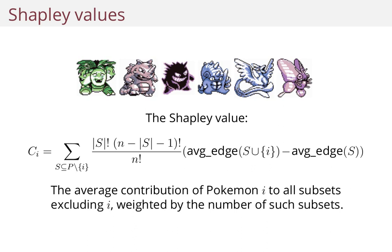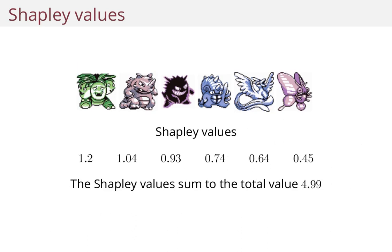But it has really nice properties, one of which is the fact that if you add all the Shapley values together, you get the total value of the party — or the coalition, as it's called in game theory.